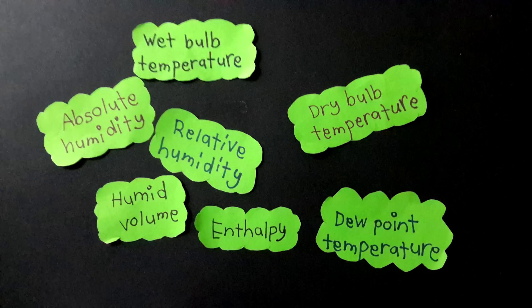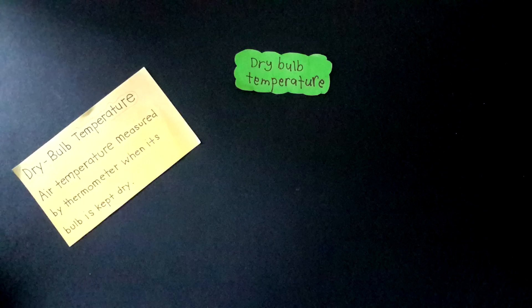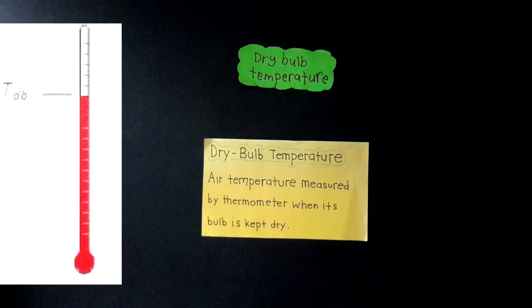Let's get started by understanding the meaning of these properties. Wet bulb temperature: the temperature registered by a thermometer whose bulb is covered by a wet cloth. Dry bulb temperature: as expected, it is the true temperature of air measured by a thermometer whose bulb is dry.